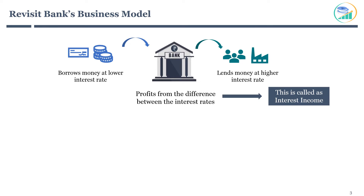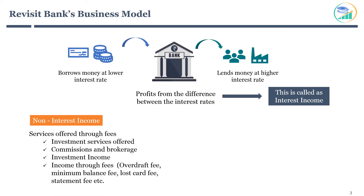Banks are also involved in various other business activities and earn additional income. This is called non-interest income and is collected through various services offered for fees. Typically, it includes investment services like mutual funds, investment advisory services, commissions and brokerage for various services, investment income, and income through fees on various things like overdraft fees, minimum balance fees, lost card fees, statement fees, and so on. I hope you found it simple to understand the bank business model.